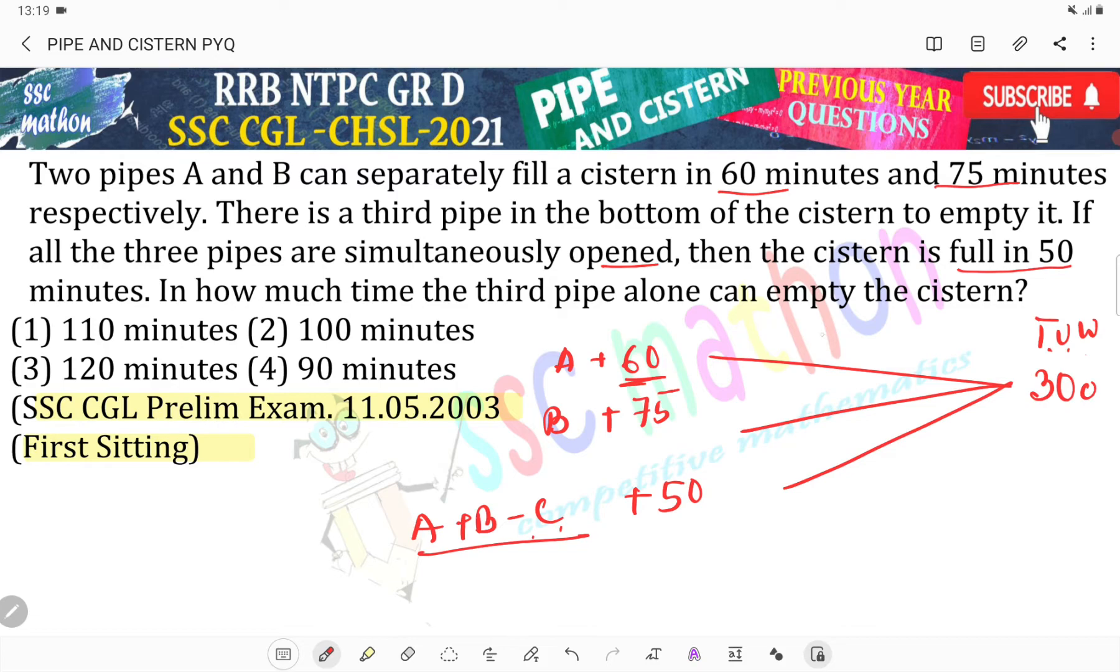So 1 minute filling 5 units. 75 minutes fills up 300 units, so 1 minute filling 4 units.